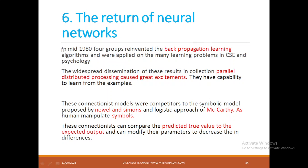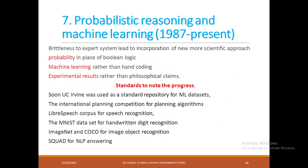Coming to the return of neural networks — in the mid-1980s, four groups reinvented the backpropagation learning algorithm and applied it to many learning problems in computer science and psychology. The widespread results in parallel distributed processing caused great experimentation. These connectionist models — capable of learning from examples — competed with the symbolic model of Newell and Simon and the logical approach of McCarthy. Connectionist models compare predicted output to expected output and modify parameters to decrease the difference, similar to reinforcement-based learning.